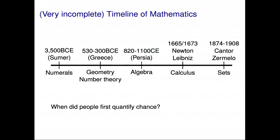But when did people first try to understand randomness mathematically, to quantify chance? What does it even mean to quantify chance? How can maths, which is so precise and pristine, hope to explain something messy, like chance or randomness or uncertainty? Well, the answer is via probability theory, which was founded around the same time as calculus. But unlike calculus, which was motivated by lofty pursuits such as physics, the study of probability was originally motivated by gambling.